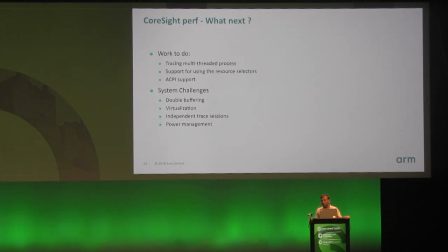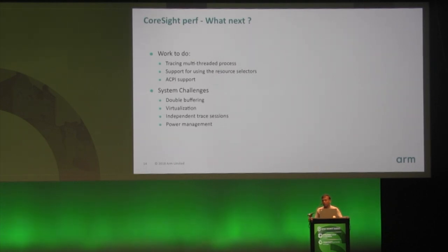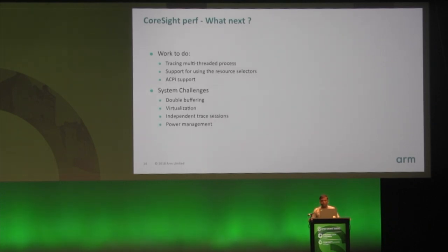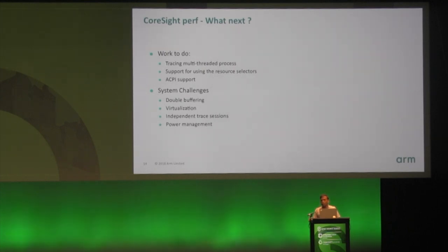We can only support single-threaded processes right now. The issue is that we have to connect multiple events into one single output buffer — that's something currently being worked on. The ETM has multiple different resources you can combine to control tracing, but we don't yet have a simple API to specify this via Perf — we are exploring the usage of eBPF filters to see if that can be useful. ACPI support is still pending, and work is in progress — we are working with the ACPI forum to standardize the graph specification which is used in DT to describe the connections.